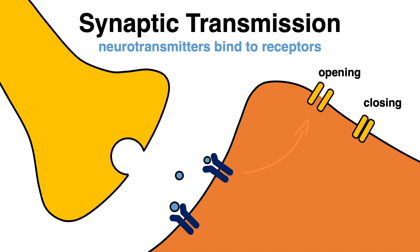Neurotransmitter-receptor interaction can increase the chance that the postsynaptic cell is activated and an action potential is generated that travels down the cell. Some neurotransmitter-receptor interactions, however, can also inhibit an electrical signal. This means, depending on the type of synapse, the electrical information can be influenced for further communication in the neuron.